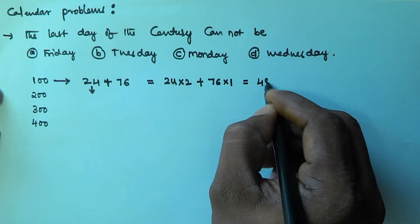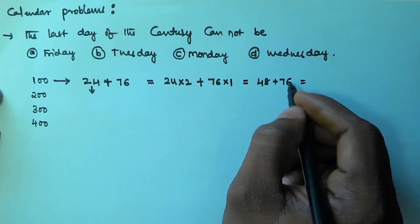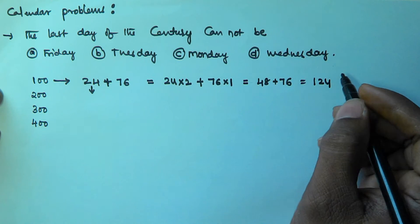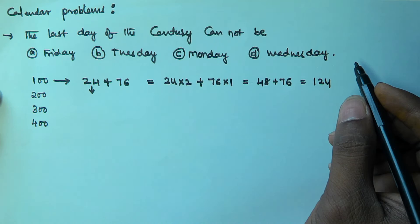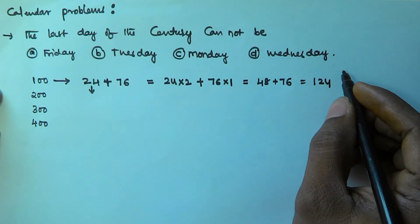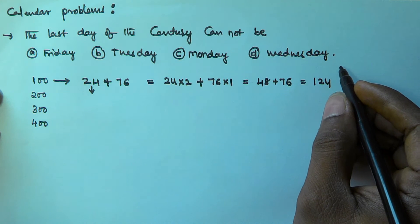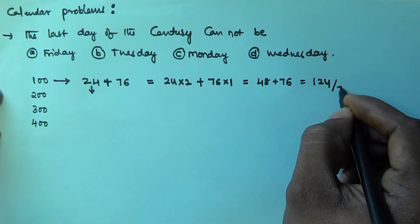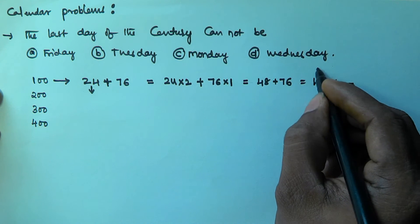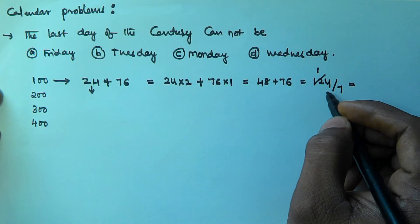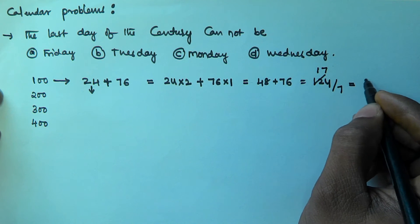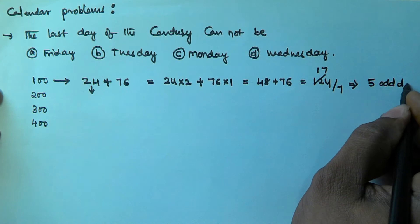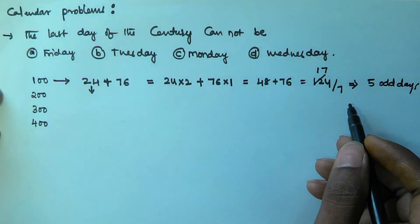Each leap year contains 2 odd days and each normal year contains 1 odd day. So total odd days = 24×2 + 76×1 = 48 + 76 = 124. We divide 124 by 7 and take the remainder: 7×17 = 119, remainder = 5. So 100 years contains 5 odd days.